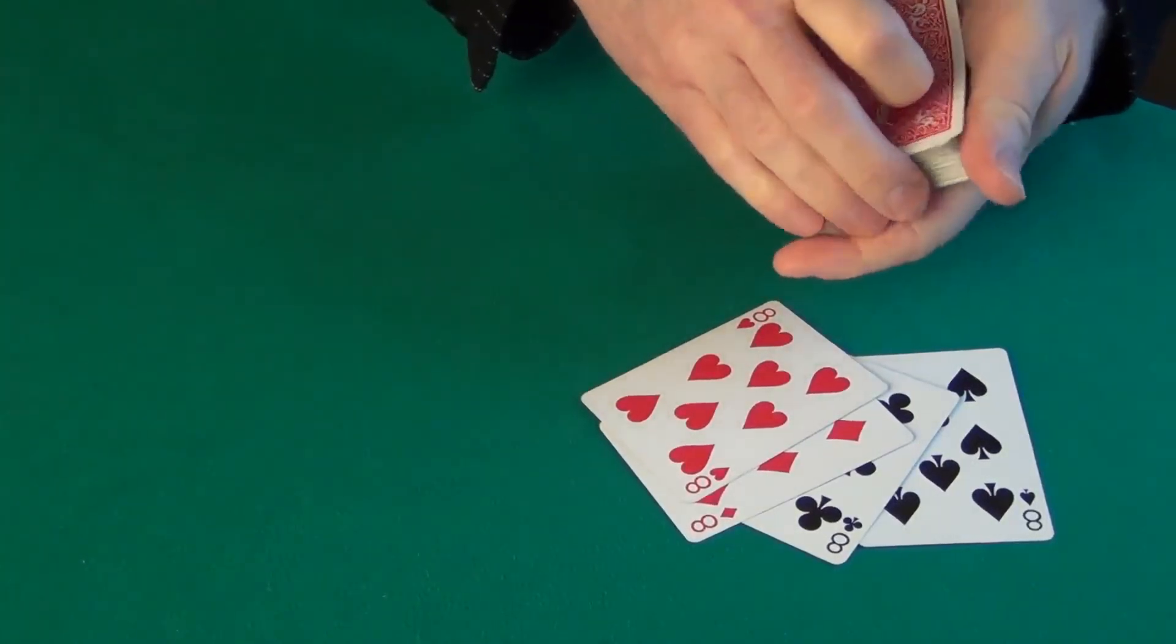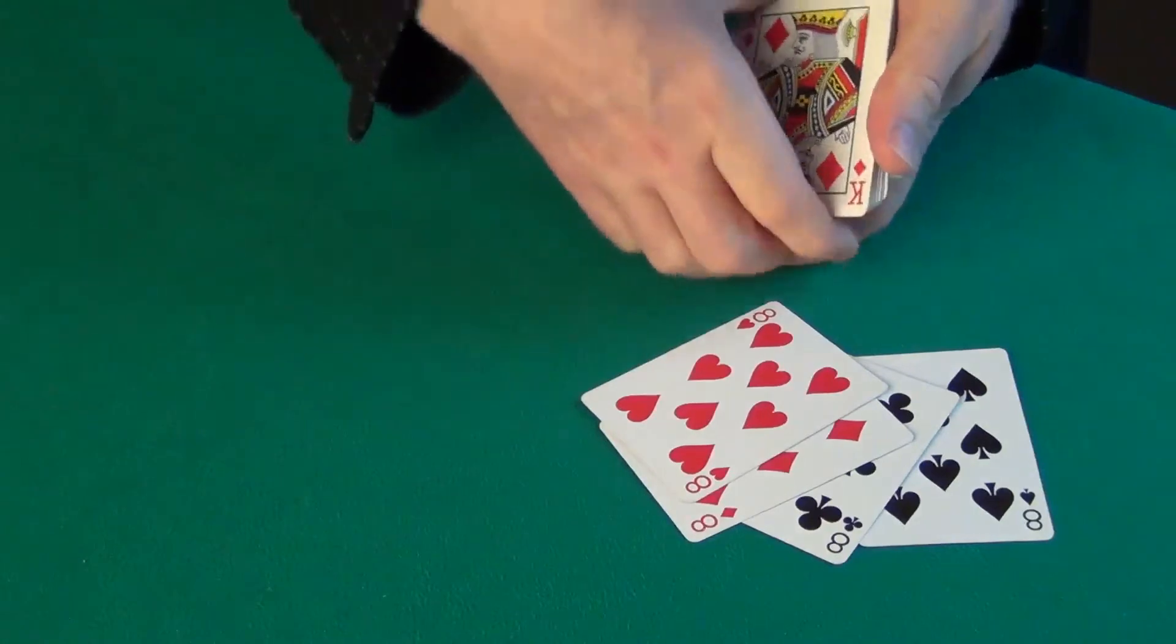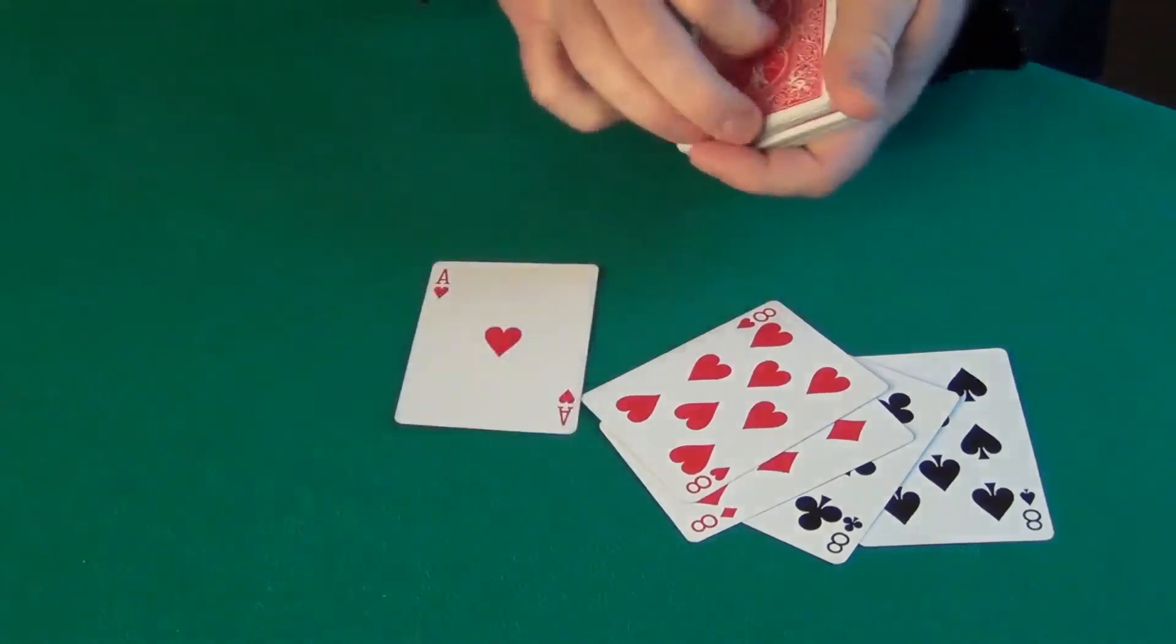Maybe I could cut an Ace. I don't want to look at the deck. Is this an Ace? It's not an Ace. Okay, what about this one? It's an Ace. Great.